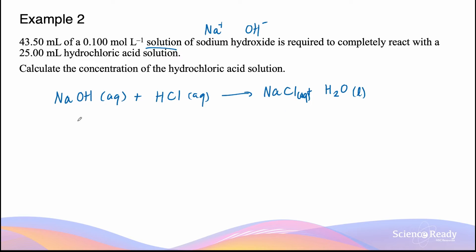Before performing the calculations, it's important to check that the equation is balanced. We have one sodium on the left and right, one oxygen on the left and right, two hydrogens on the left and two in the water molecule on the right, and one chlorine on the left and right. So this equation is already balanced — no coefficients need to be added.